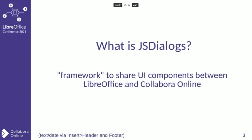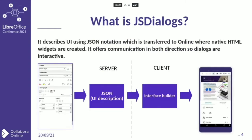We can describe JS Dialogues as a framework to share user interface components between LibreOffice and Collabora Online. It allows us to improve both products at the same time. So for example when we add a new feature to Collabora Online we also add that to LibreOffice. The general idea is very simple: we take the desktop application user interface, we describe it in JSON format, then we send that JSON to the client web browser and we recreate the interface using that description.